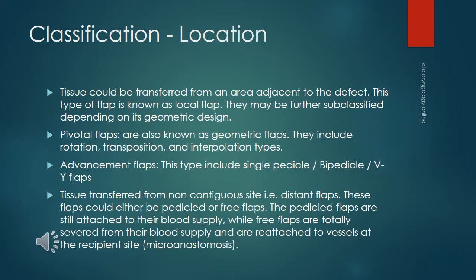According to location of the donor site, tissue transferred from an area adjacent to the defect is a local flap. These may be subclassified by geometric design. Pivotal flaps include rotation, transposition, and interpolation types. Advancement flaps include single pedicle, bipedicle, and VY flaps. Tissue transferred from a non-contiguous site are distant flaps, which can be pedicled — still attached to their blood supply — or free flaps, which are totally severed and reattached to vessels at the recipient site.